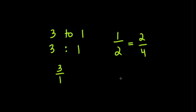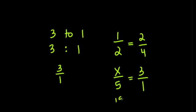Proportions are often used with cross multiplication. So for instance, if I had x over 5 equals 3 over 1, I would do 5 times 3 equals 15, which equals x. So this is one way that we could use proportions to solve for things.